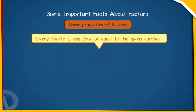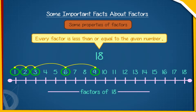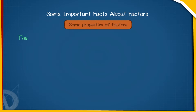We must also know that every factor is less than or equal to the given number. Consider the number 18. The factors of 18 are 1, 2, 3, 6, 9, and 18. Clearly, no factor is greater than 18.